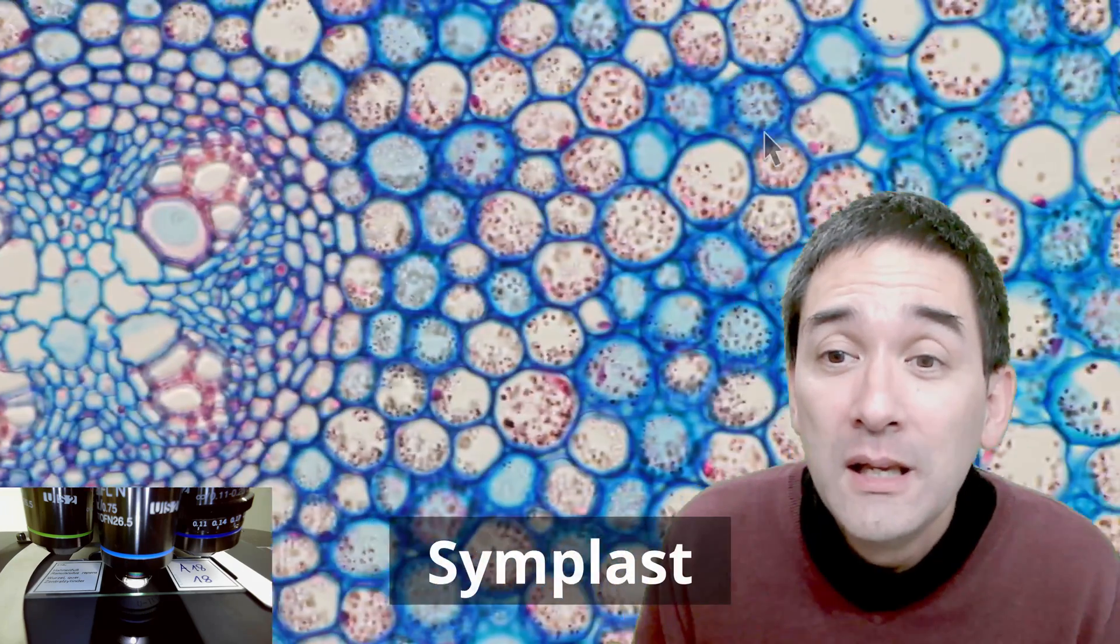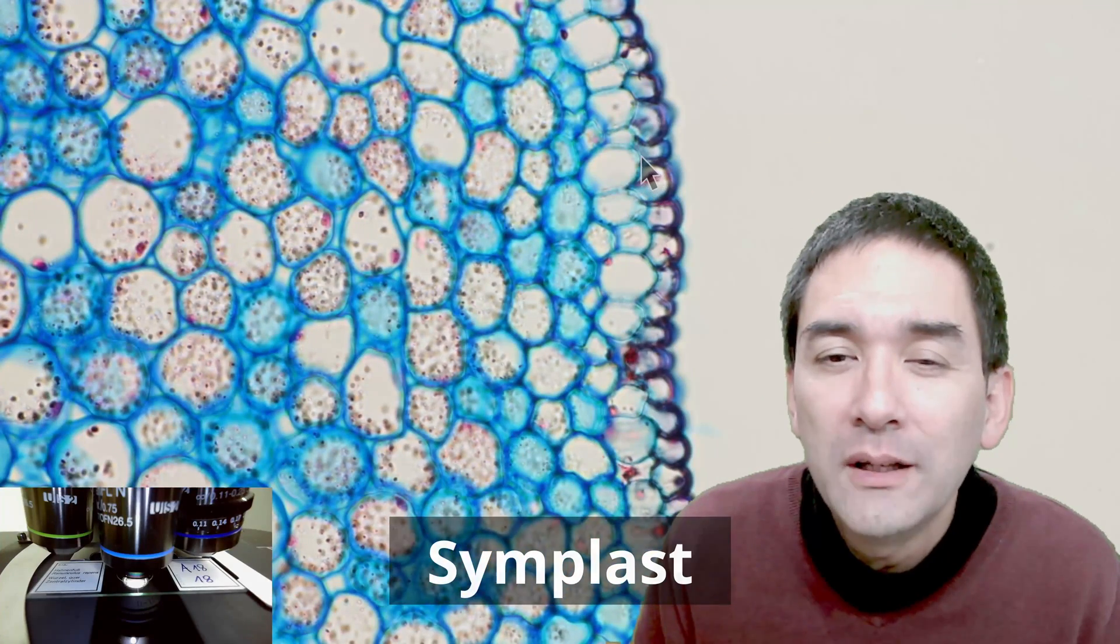So this endodermis here plays a very important role for actually ensuring that no bad substances are able to go into the xylem and then up to the plant. So this is basically the so-called apoplast pathway. And the symplast pathway is a second way that water is able to travel and this basically means that water is actually able to travel from cell to cell to cell by going through the cytoplasm of the cell.